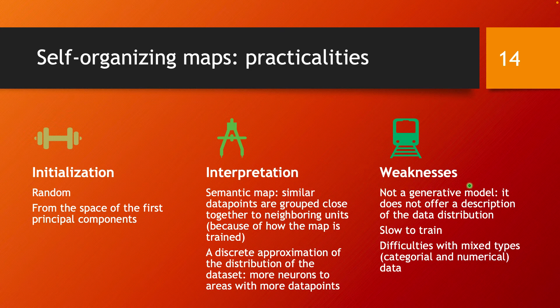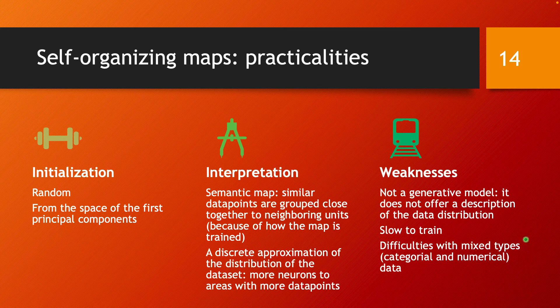Self-organizing maps are going out of favor nowadays and do have a number of weaknesses. One is that it's not a generative model — it doesn't offer an explicit description of the data distribution. Another weakness is that they tend to be very slow to train, and they have particular difficulty with speed when the data has mixed types, meaning data that contains both categorical and numerical variables.